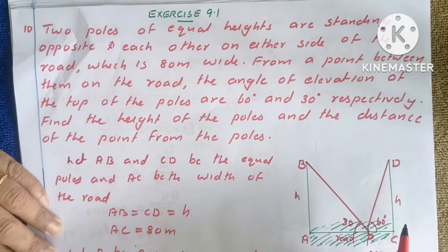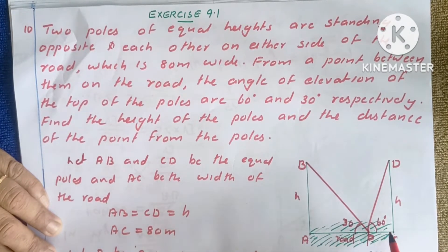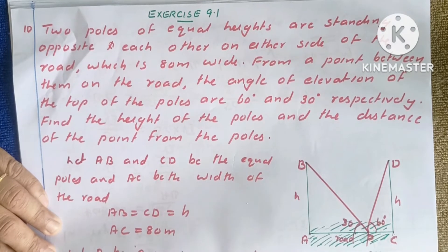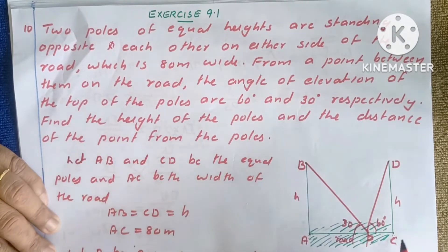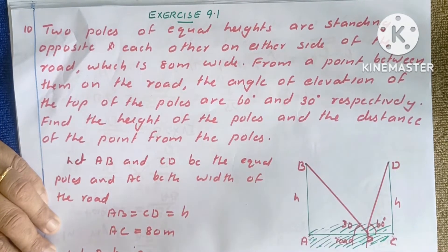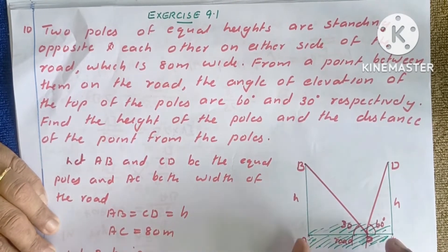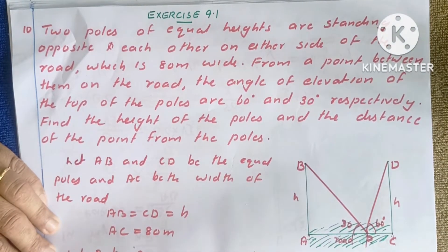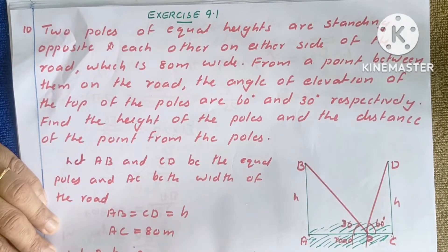We draw the figure of the road. The road is 80 meters wide. On opposite sides of the road, we have two poles — one is AB and one is CD. These two poles are of equal length.